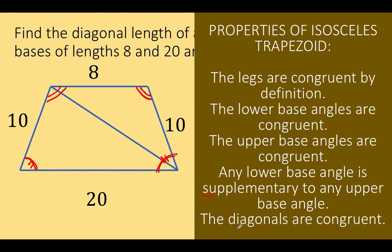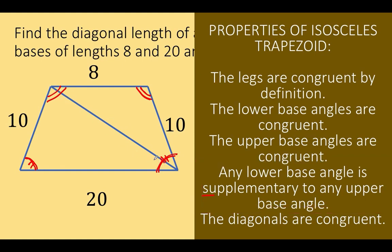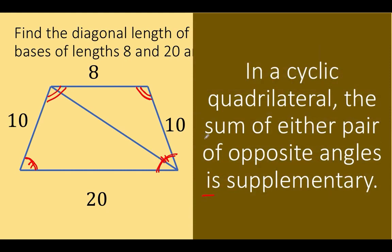The last property is that diagonals are congruent — we have one diagonal and we can draw another diagonal, and these two diagonals are congruent. Among these properties, we are particularly interested in the property that says any lower base angle is supplementary to any upper base angle. Because of this property, we can show that the opposite angles of this isosceles trapezoid are supplementary.